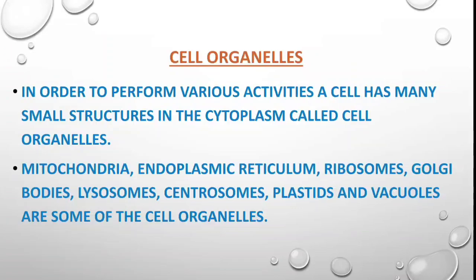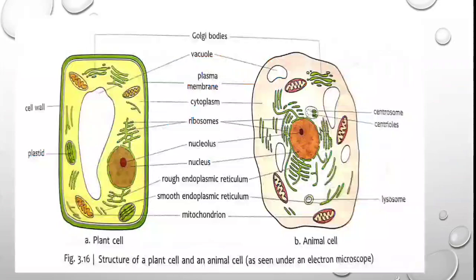Some of the cell organelles we are going to learn are mitochondria, endoplasmic reticulum, ribosomes, Golgi bodies, lysosomes, centrosomes, plastids, and vacuoles. You can see the different structures of various cell organelles in the diagram, and we will discuss them one by one.